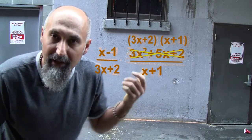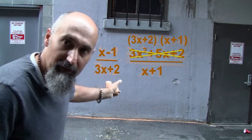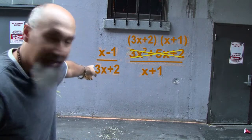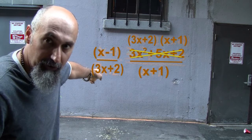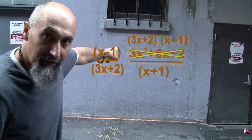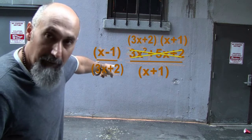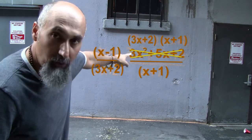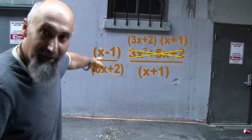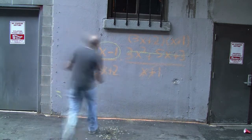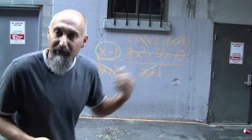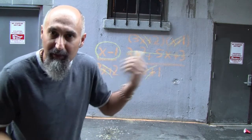When we factor the trinomial, it breaks down into two polynomials. Now we can see we have (3x + 2) in the bottom and (3x + 2) up top — those cancel. We also have (x + 1) in the bottom and (x + 1) on top — those cancel too. All we're left with is (x − 1). So this entire expression multiplied together equals just x − 1.